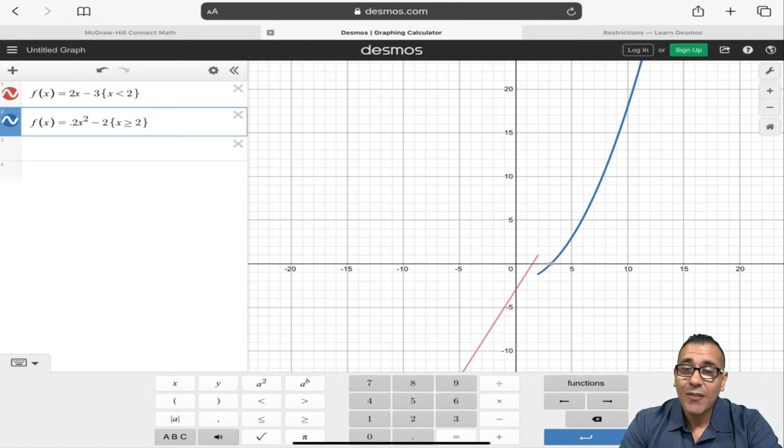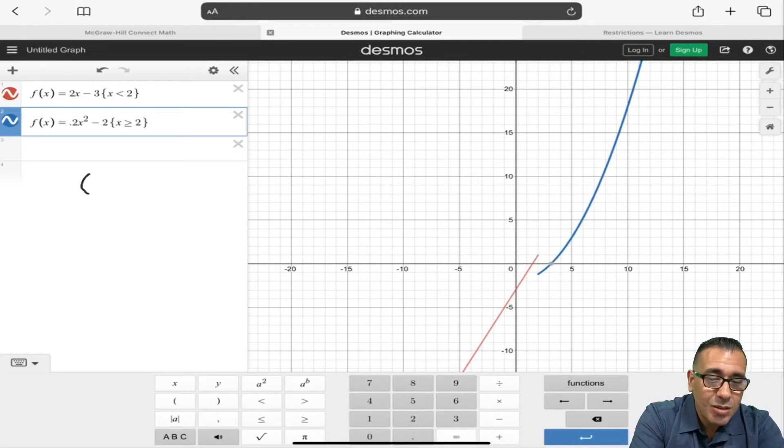So how did I get this graph? The main part, the little piece that our people are missing is when you're entering in those domains, those restrictions, make sure you're using these curly brackets here. And that's what's going to do the trick for you.